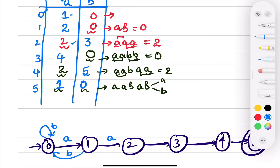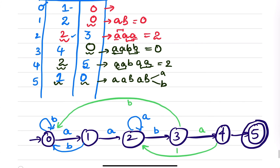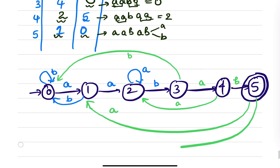From state two on input a you stay at two, and on input b you go to three. From state three on input a you go to four, and on input b you go to zero. From state four on input a you go to two, and on input b you reach the final state five. From state five on input a you go to one, and on input b you go to zero.